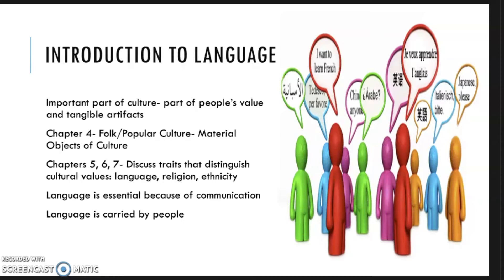Language is an important part of culture. It is part of people's values and tangible artifacts. In Chapter 4, we introduced the ideas of folk and popular culture and talked about material objects of culture. In Chapters 5, 6, and 7, we are going to be discussing the traits that distinguish cultural values. Chapter 5 covers languages, Chapter 6 will be about religion, and Chapter 7 will be about ethnicity. We start with language because it is essential — it is how we communicate.